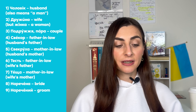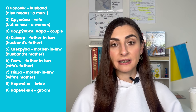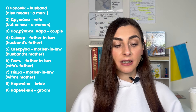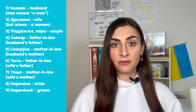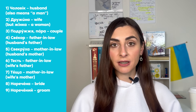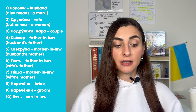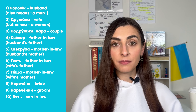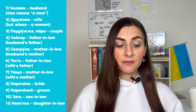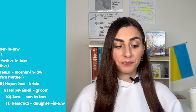You can see that наречений and наречена have the form of adjectives, so you can easily understand: наречена is feminine gender, наречений is masculine gender. Зять means son-in-law. Невістка means daughter-in-law.